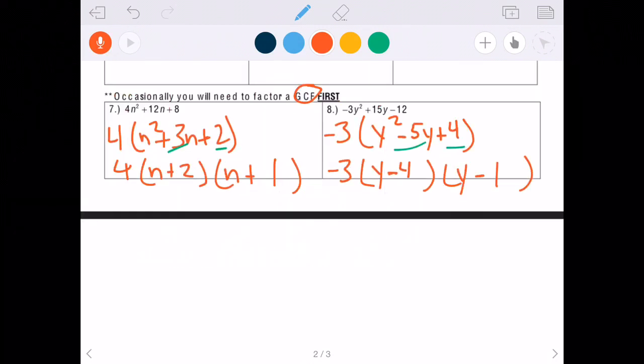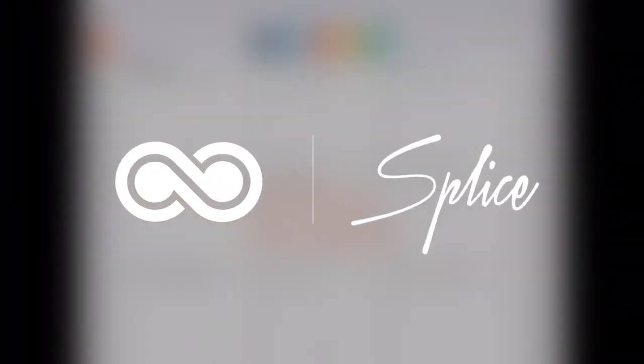So again, like I said, this is part three of the factoring series. And anytime you come across a problem like this and you can pull out a GCF, that's going to be your first step. So before you even start factoring, the first thing you should see is, is there a GCF you can factor out? And that is exactly what this video was on, how to do that.